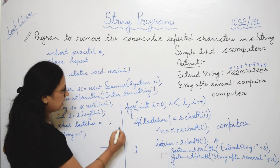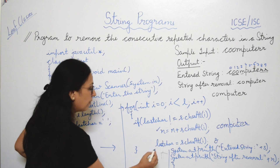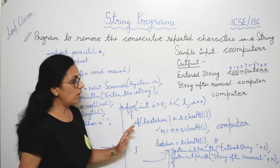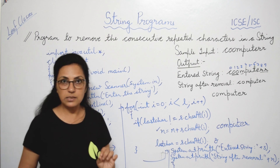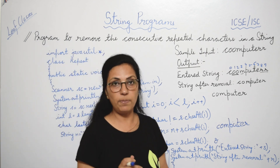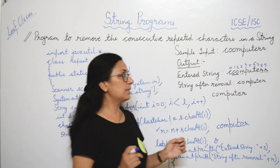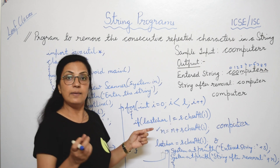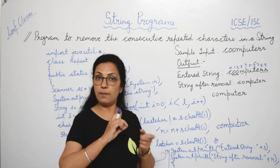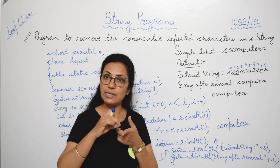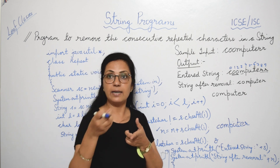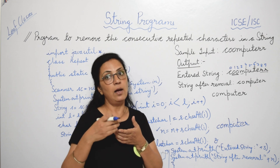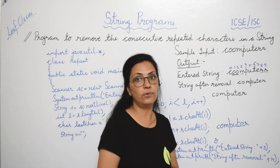This is a very easy program. Let me summarize the logic: every time we extract a character and compare it with the previous character. If the previous character and the current character match, we do not add that character to the new string. Otherwise, we keep adding it. I hope this is clear to all of you.